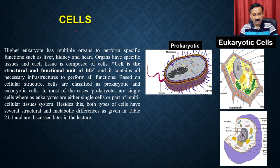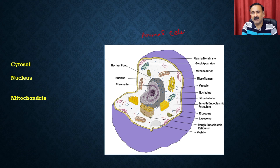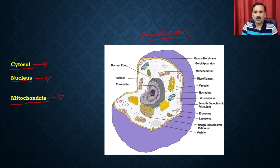Subsequent to that, we discussed about the cytosol, the nucleus, and the mitochondria. We started our discussion about the animal cell and discussed three organelles — cytosol, nucleus, and mitochondria — covering their mechanism, their role in cellular physiology, and structural details. So now in today's lecture, we are going to start discussing some more organelles from eukaryotic cells.